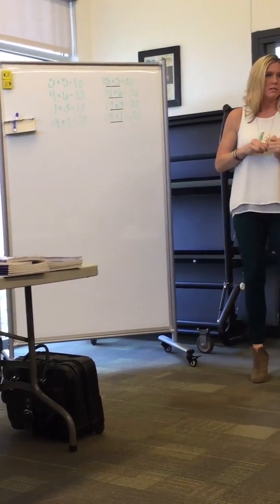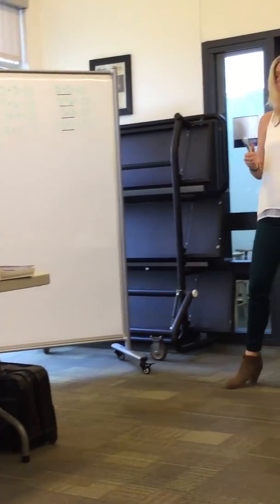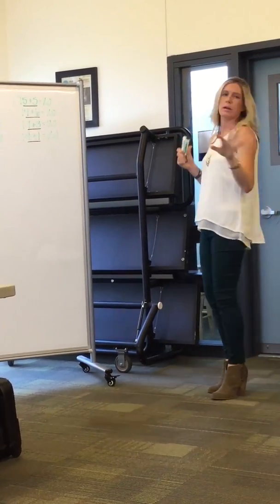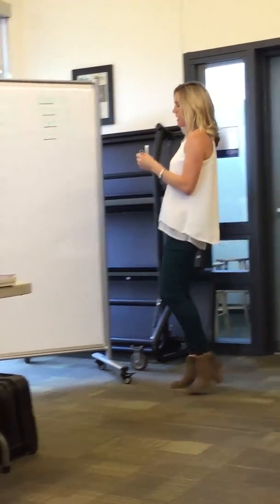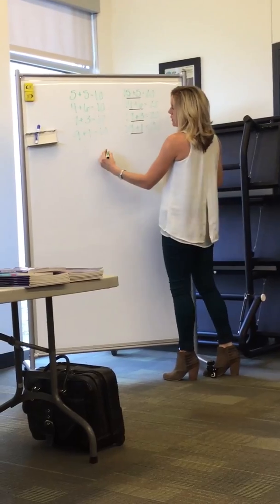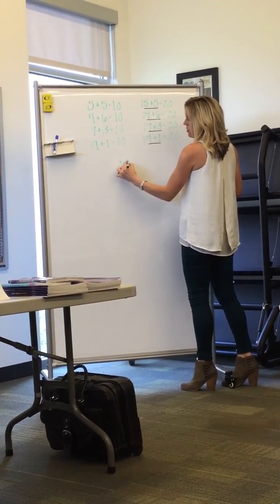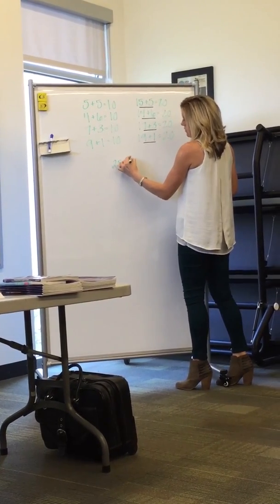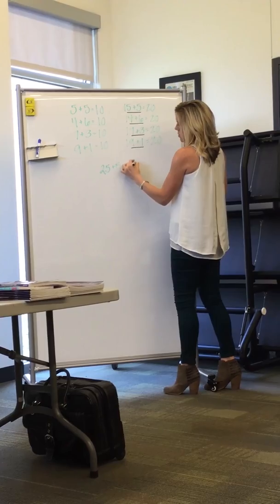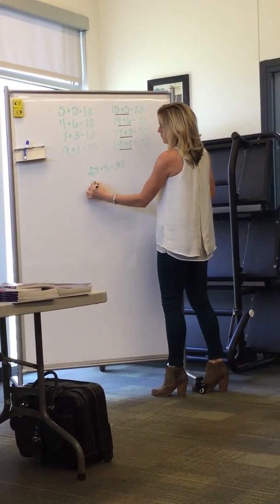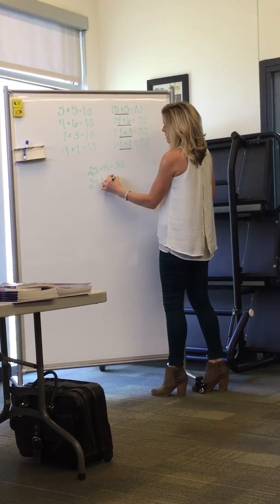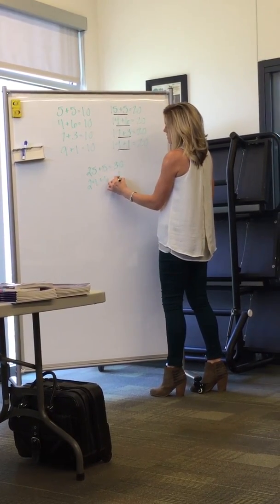Wouldn't it be lovely if our kids made that connection? So what would it look like if we were going to do 30s? I don't usually do 30s with kids, but help me out here. What if I had 25? How many would you have? Five. And what if I had 24? Six. Which is 30.